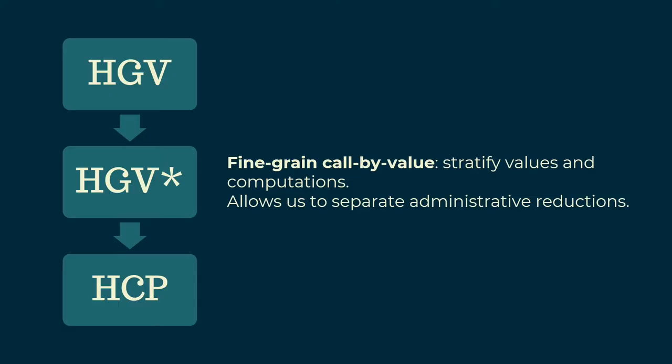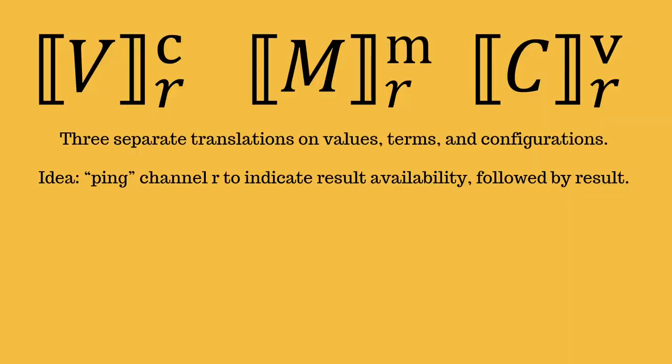Now, a third contribution is HGV's relationship with linear logic. In this case, Cocker, Montesi and Perisotti's HCP calculus. We factor our translation through an intermediate subcalculus, HGV*, which has an explicit stratification between values and computations. Now, this allows us to separate out administrative reductions. We have three translations: one for values, one for terms, and one for configurations. I don't have time to go into the details of the translations here, but the idea is that the translations are parameterized by a result channel R, so whenever a value is available, we send a unit ping along R, followed by the value.